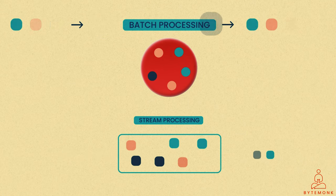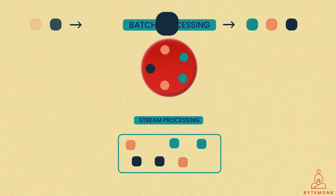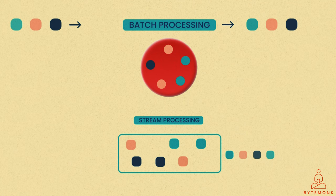Unlike stream processing where data is analyzed as it is generated, batch processing collects and processes data over a period of time, typically in scheduled intervals.